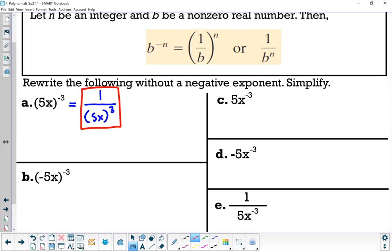All right, letter B, we have parentheses negative 5x close parentheses to the negative three. This is similar to part A, so this is equal to one over, and then in parentheses, negative 5x close parentheses, and then your exponent goes from negative to positive, so to the power of three. Again, don't worry about simplifying this further for now. We'll do some more of these in a couple lessons.